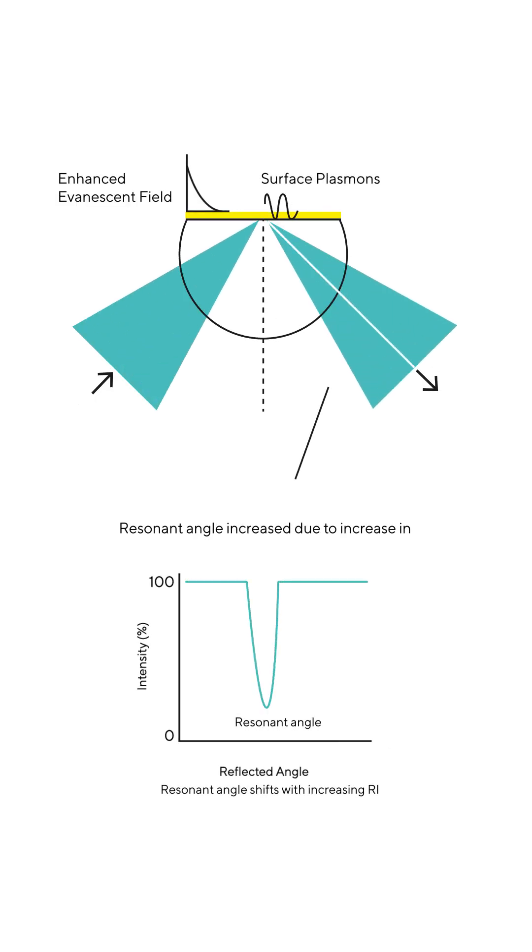If a thin gold layer is placed at the interface, some of the reflected light is absorbed, reducing the intensity of reflected light at a specific angle known as the resonance angle. This occurs because light interacts with delocalized electrons in the thin metal film which are undergoing oscillation, called a surface plasmon.